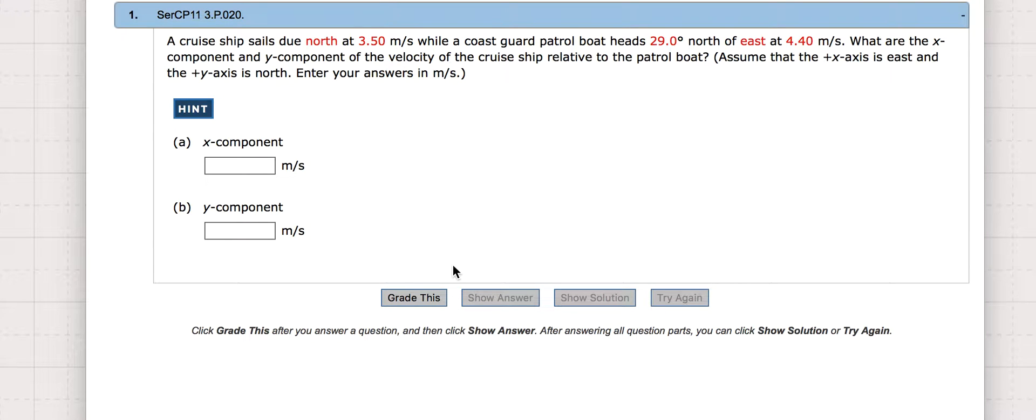A ship sails north at 3.50 meters per second while a Coast Guard patrol boat heads 29 degrees north of east at 4.40 meters per second. What are the x component and y component of velocity of the cruise ship relative to the patrol boat? Just asking for the components here.